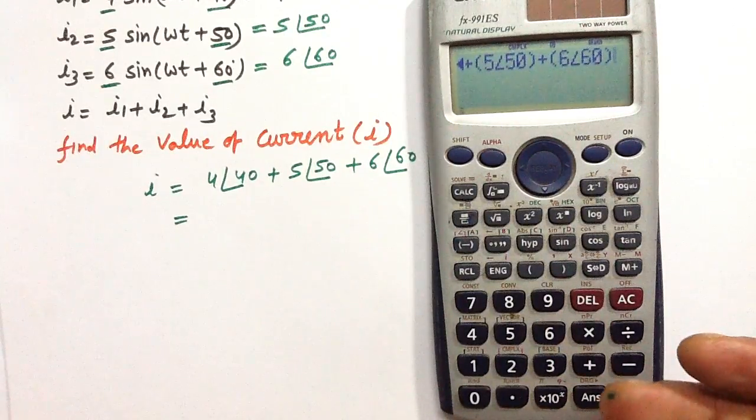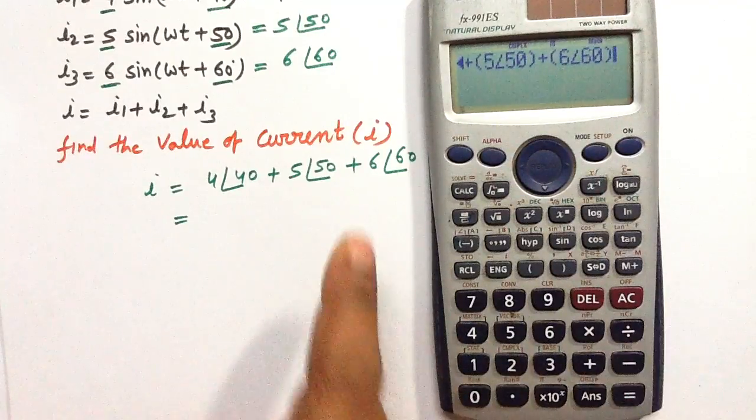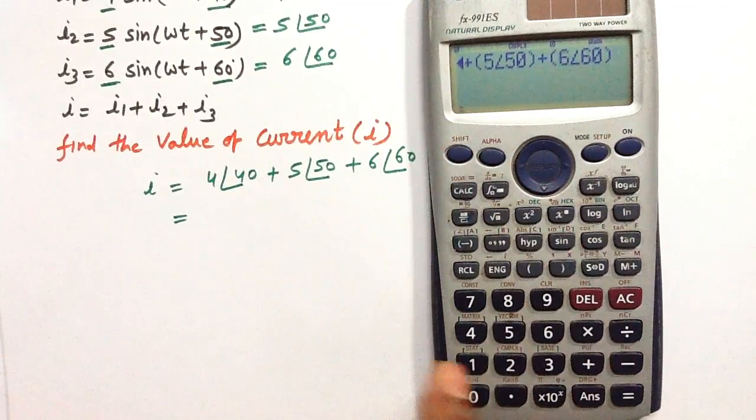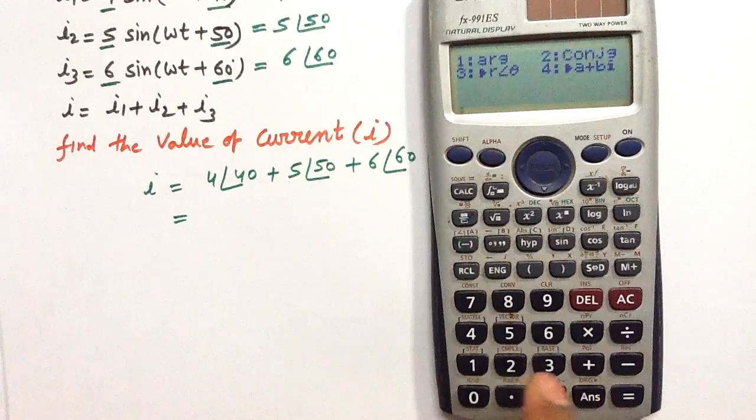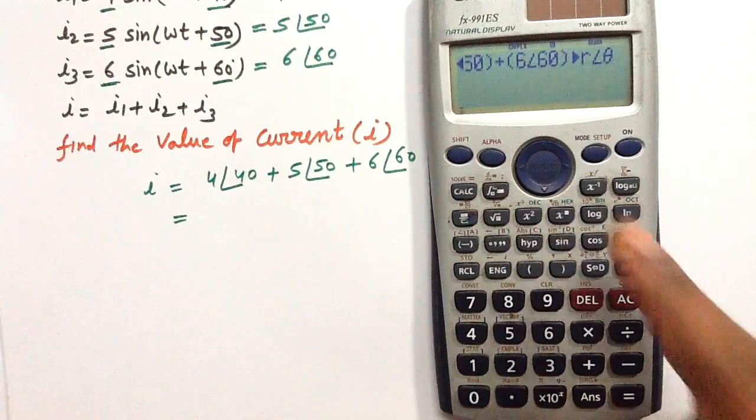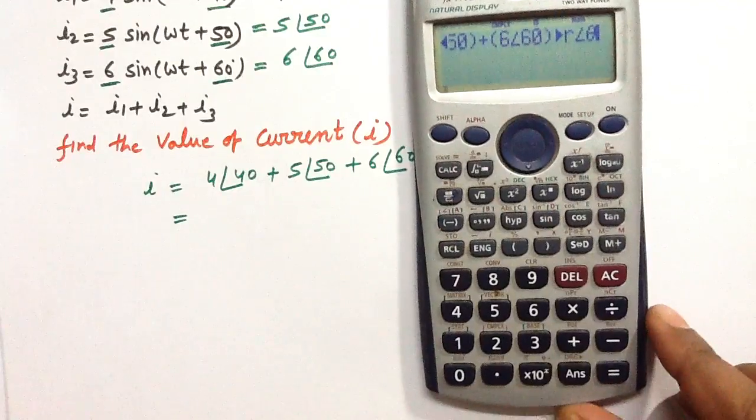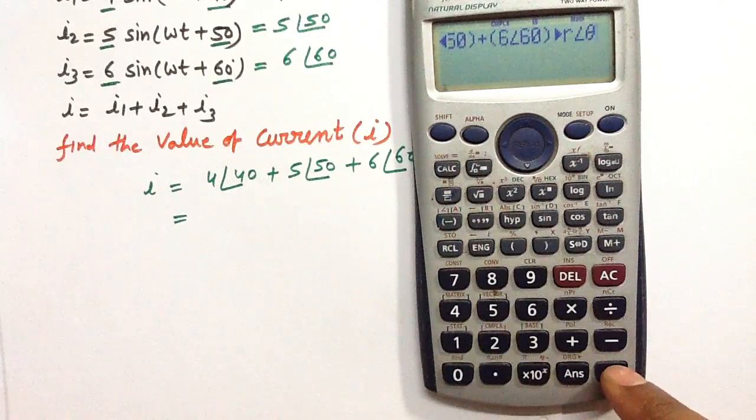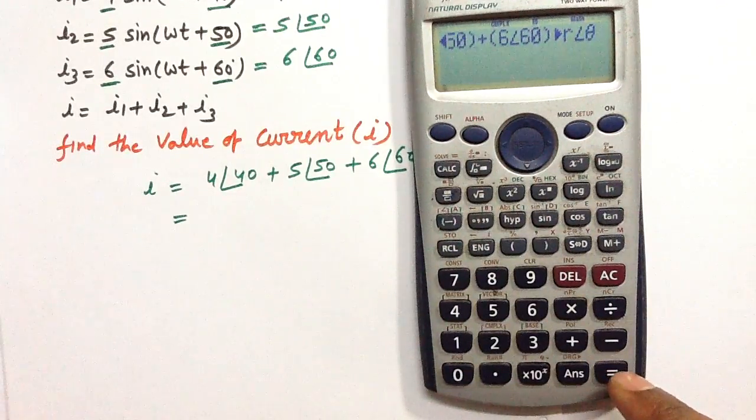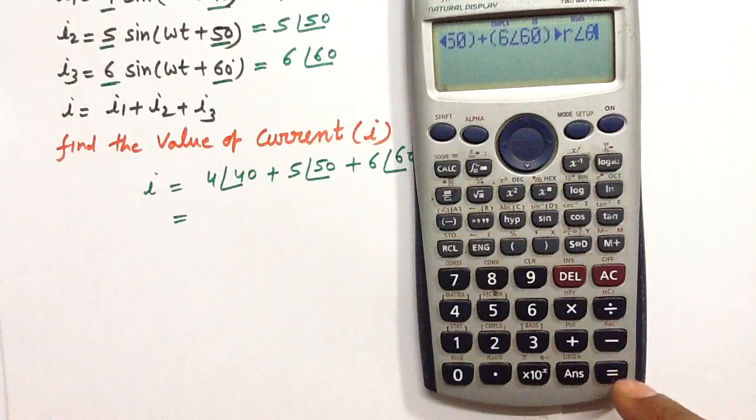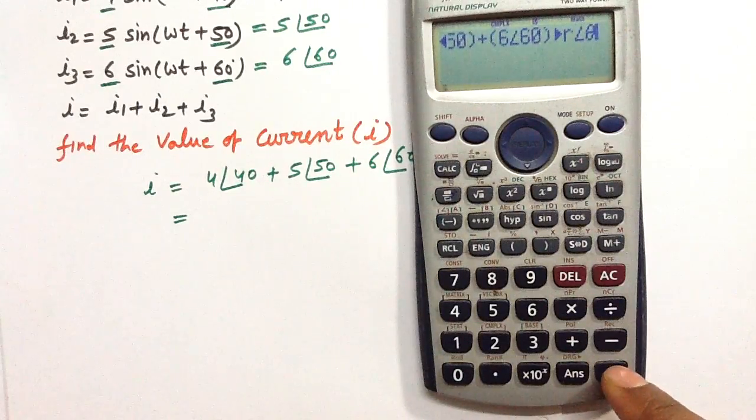I want to find the solution in polar form, so press Shift 2, then 3. When you press equals, the calculator will give the solution in polar form.